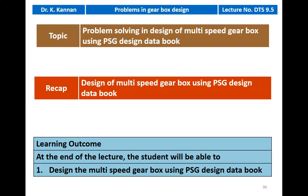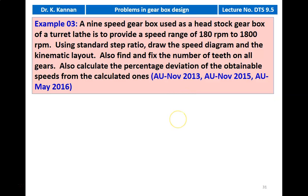We are going to solve problems in the design of a 9-speed gearbox using the PSG design data book. In the earlier lecture, we solved a problem on the 6-speed gearbox. Example number 3: A 9-speed gearbox used as a headstock gearbox of a turret lathe is to provide a speed range of 180 RPM to 1800 RPM. Using standard step ratio, draw the speed diagram and kinematic layout, also find and fix the number of teeth on all the gears, also calculate the percentage of deviation of the obtainable speeds from the calculated ones. This question appeared in November 2013, November 2015, and May 2016.